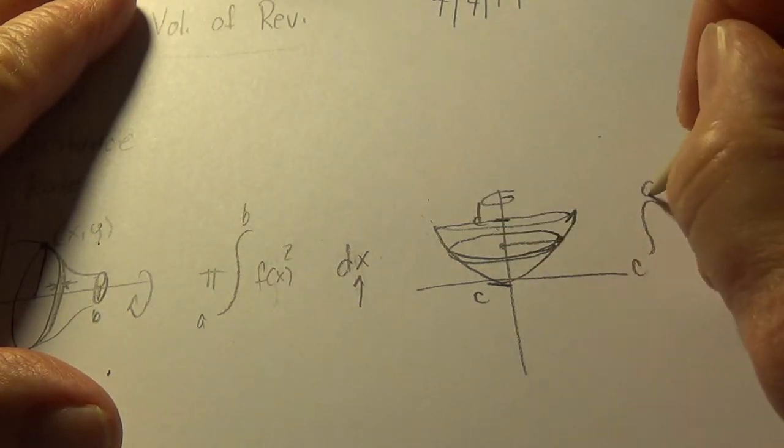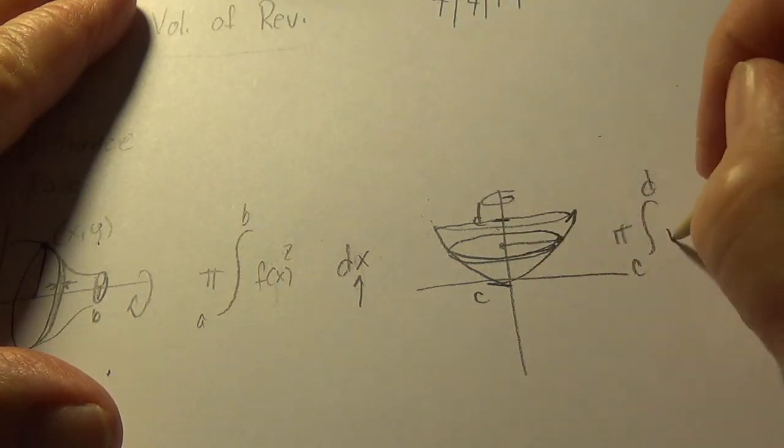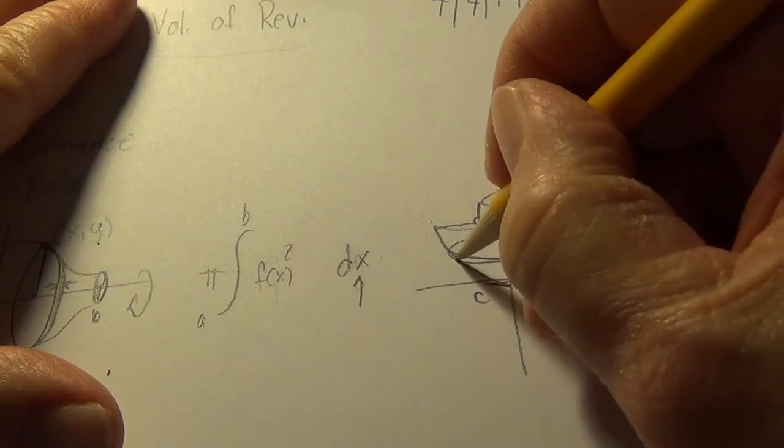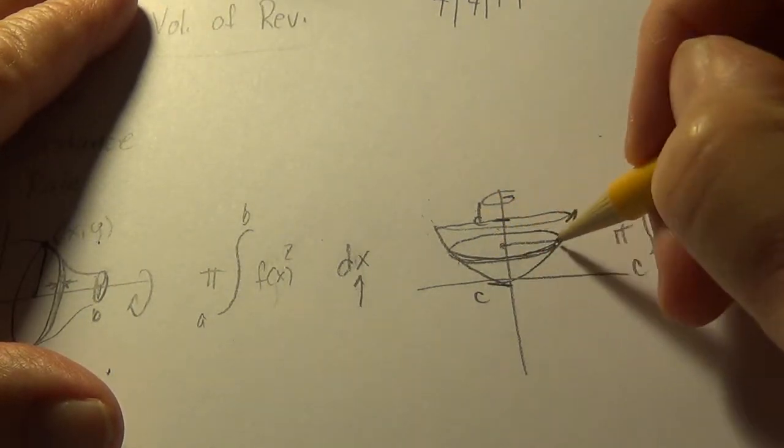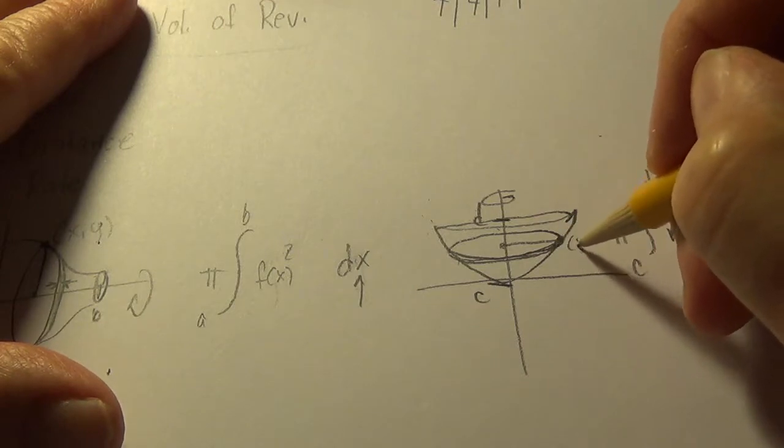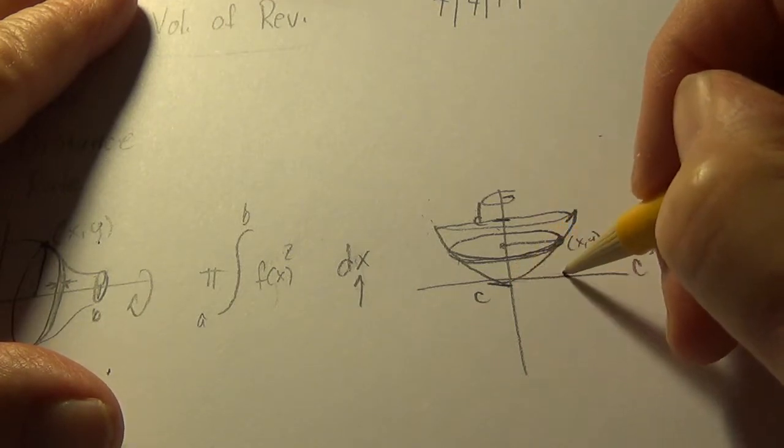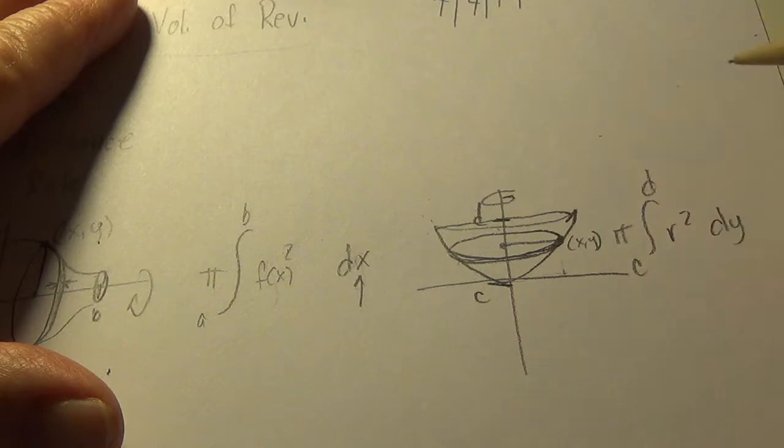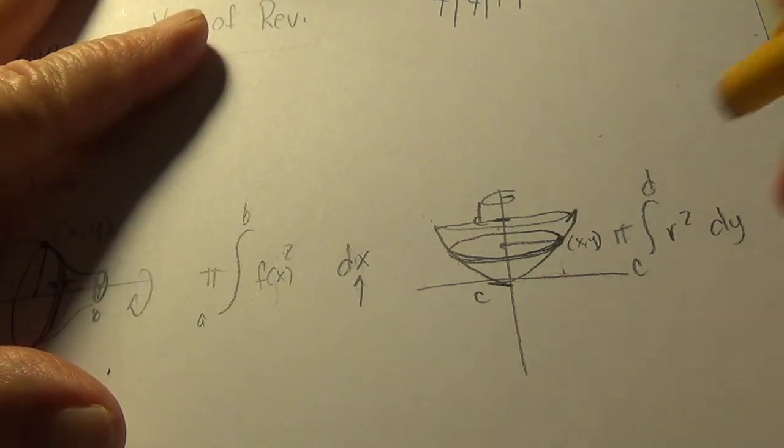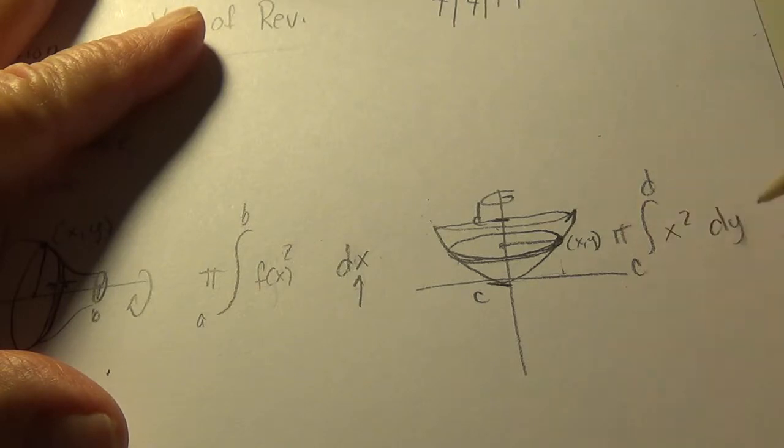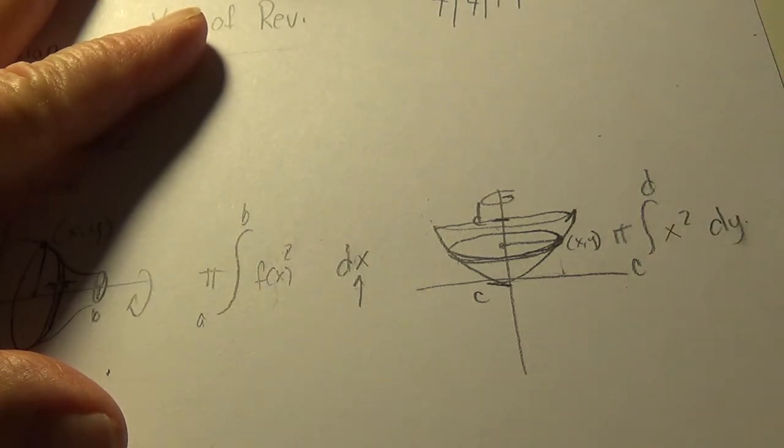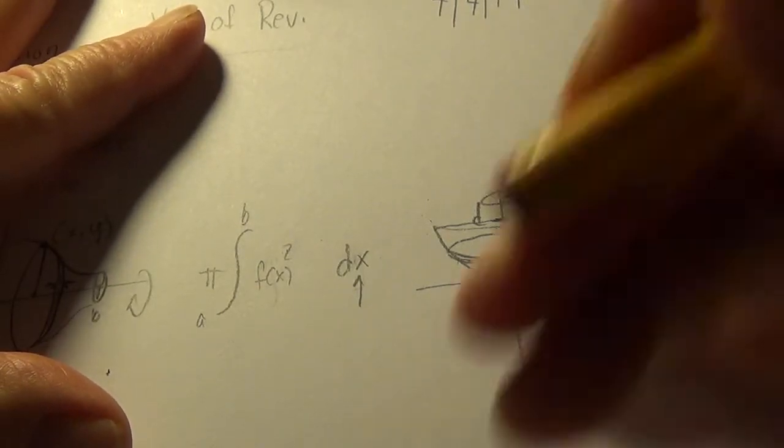So the integral from c to d of pi r squared, and this time the thickness is a dy, and r is associated with this point xy, we go x over and y up, so it's an x value, the radius is x, but we want to work this in terms of y, so we're going to call it f of y.